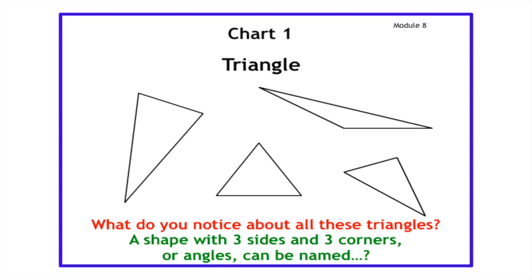So what do you notice about all these triangles? Let's count the sides. Each triangle has one, two, three sides — they all have three sides. Let's see the angles: one, two, three angles on each triangle. They all have three angles.